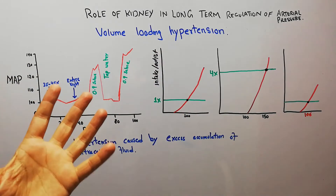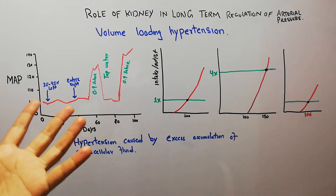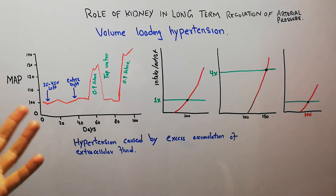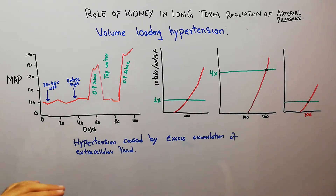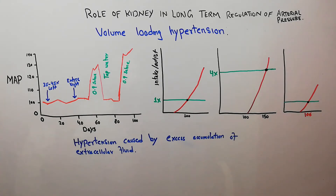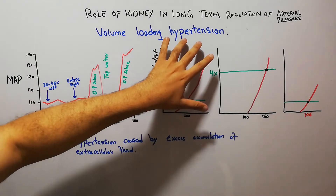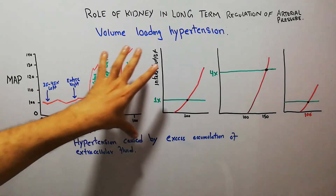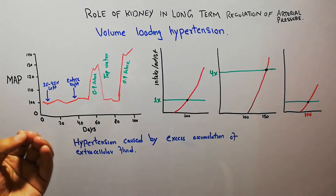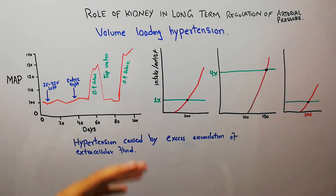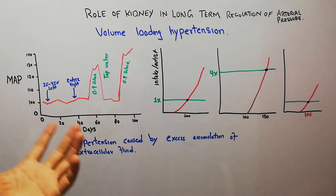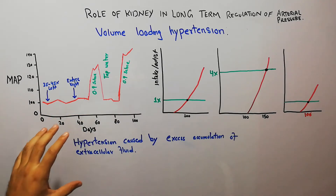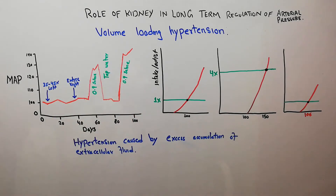Hypertension is basically the increased arterial pressure. The normal level of arterial pressure is around 90 mmHg, and when the mean arterial pressure or blood pressure remains above the upper level of normal, it is considered hypertension. Hypertension could be due to the accumulation of salt, accumulation of extra volume, or defects in the excretion of fluid volume.